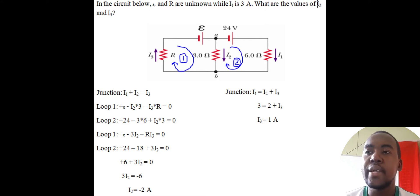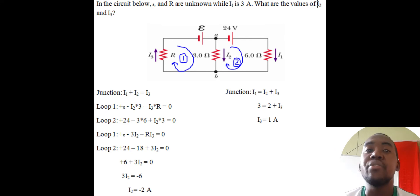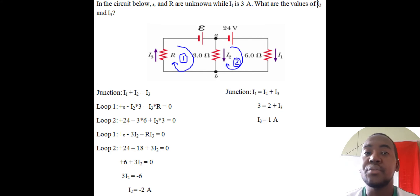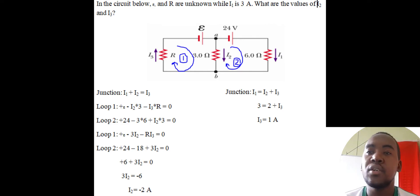Since I2's direction changed, we rewrite the junction equation as I1 = I2 + I3. We know I1 = 3 and I2 = 2 (ignoring the negative since we rewrote the equation), so 3 = 2 + I3, giving I3 = 1 amp. That concludes question 1.